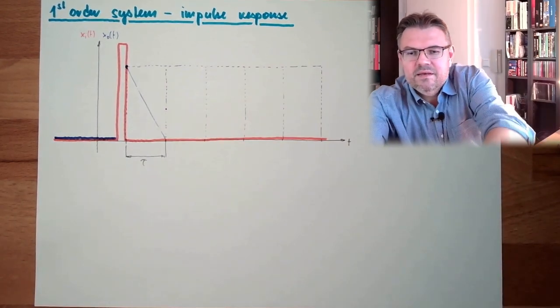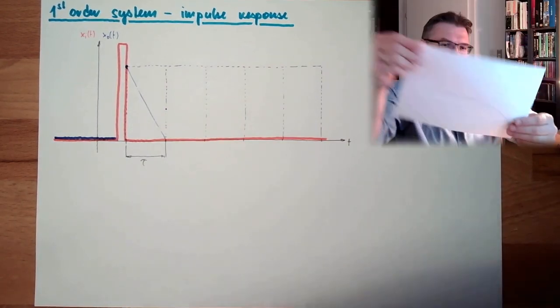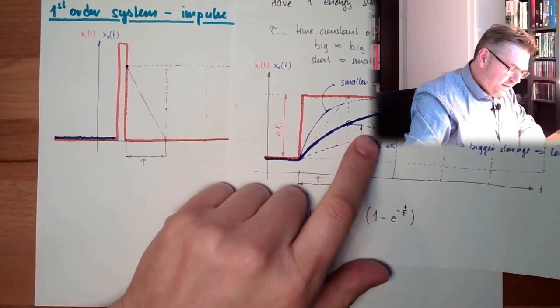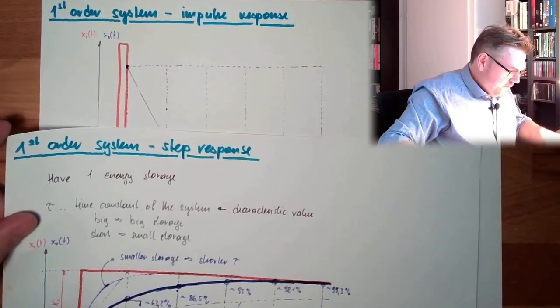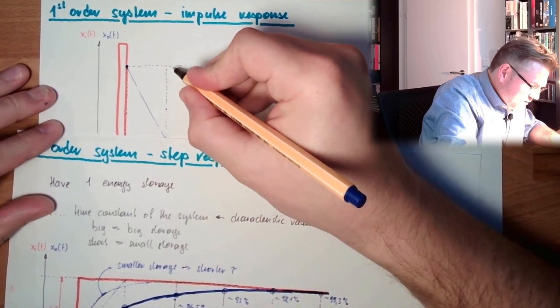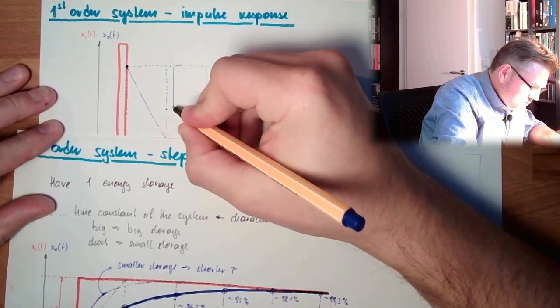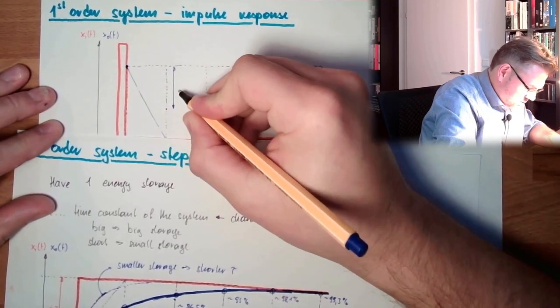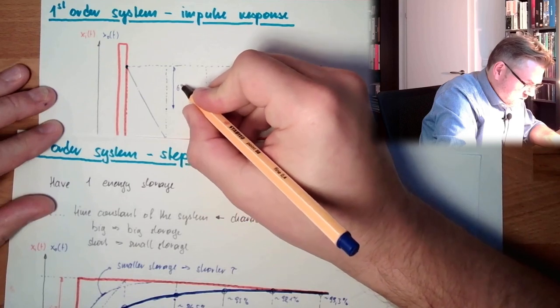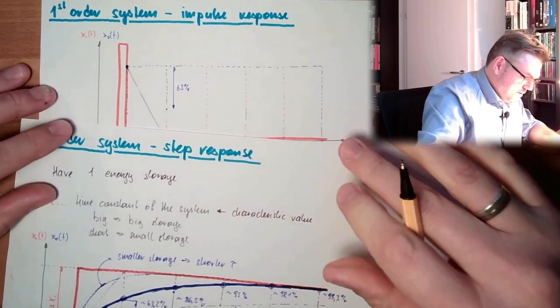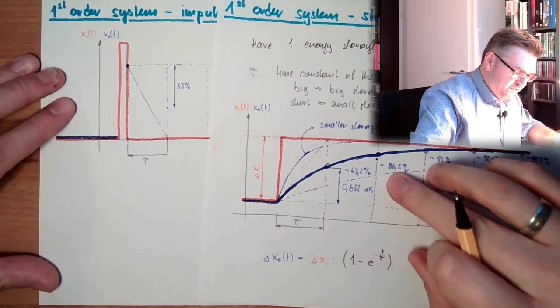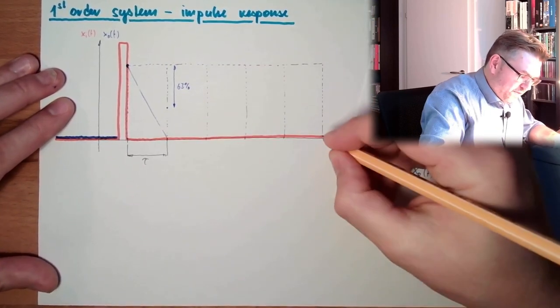Basically, it looks exactly like this, but the other way around. So here we have lost 63 percent, exactly the same as we have here. Then here we are there. After five tau, we have lost 99.3 percent.